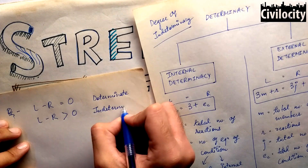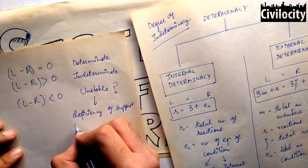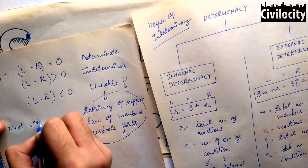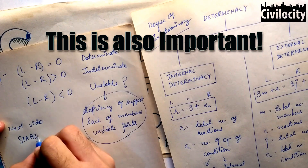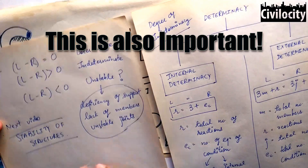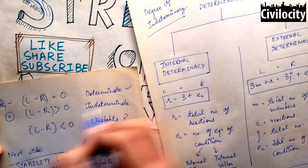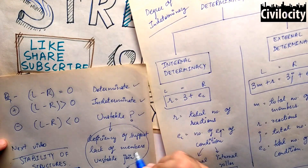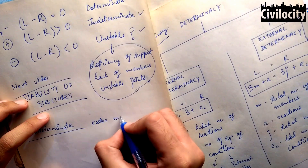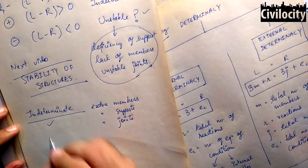If the value from the equation is positive, then the structure is indeterminate. If the value is negative, then the structure is unstable. A structure becomes unstable when it has improper support reactions, improper member arrangement, or improper joint configuration. I will make the next video on stability of structures. If the value is zero, the structure is determinate; positive means indeterminate; negative means unstable.